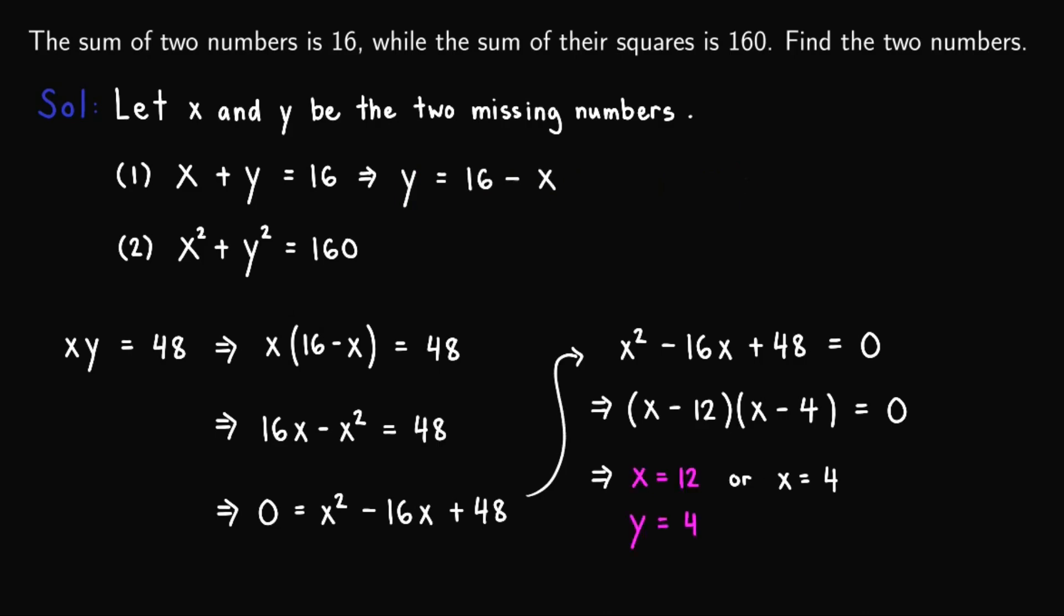On the other hand, if x equals 4, we do the same process using the obtained equation. So plugging in 4 here, we'll have 16 minus 4, or when simplified, that is 12. So when x equals 4, y equals 12.